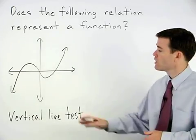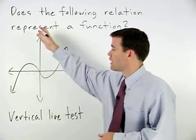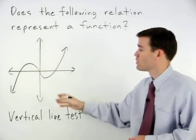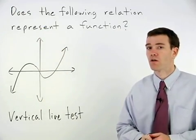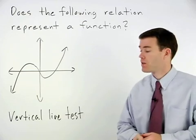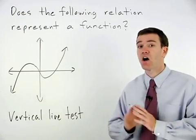In other words, if we can draw a vertical line that passes through more than one point on the graph, then the relation is not a function.